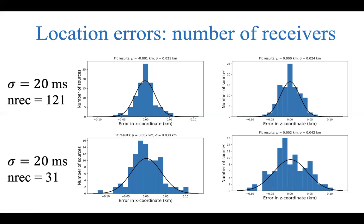Repeating the same exercise with 20 millisecond noise standard deviation, using 121 receivers in the first row and 31 in the second row, we see the standard deviation increases from 21 to 38 meters for x and from 24 to 42 meters for z. We observe similar behavior despite the different noise level. Even in the worst case — very high noise and very few receivers — the largest error is about 100 to 110 meters for both x and z coordinates, which is still pretty good given the circumstances.